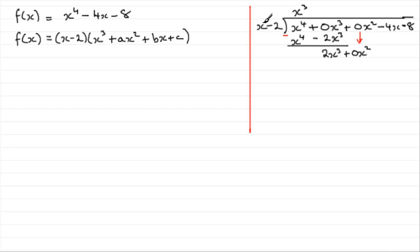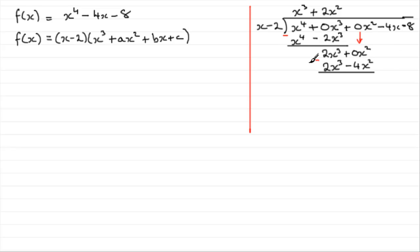What do we multiply x by to give 2x cubed? That's got to be 2x squared, so we put plus 2x squared up there. Now we multiply 2x squared by x minus 2: 2x squared times x is 2x cubed, and 2x squared times minus 2 is minus 4x squared. We subtract to find the remainder: 2x cubed minus 2x cubed is 0, and no x squared minus minus 4x squared gives plus 4x squared. Bring down the next term, minus 4x.